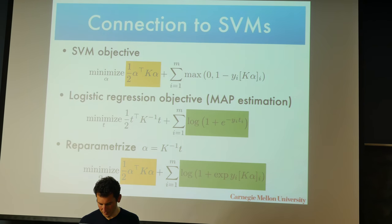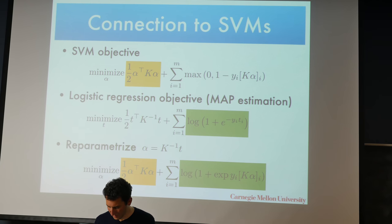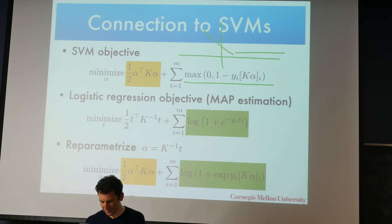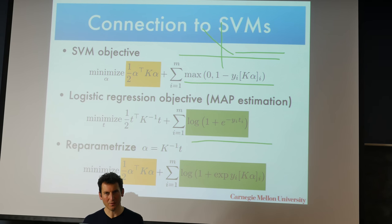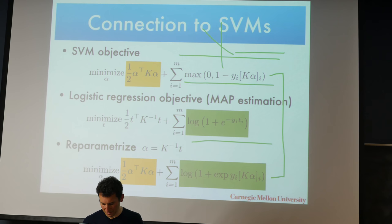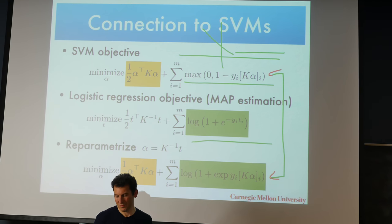Connecting this back to an SVM: in an SVM, we minimized one-half alpha-transpose K alpha plus the soft margin loss function. For logistic regression we have something similar, with the green function as our loss. If we reparameterize alpha equals K-inverse T, we get something that looks very similar to what we had before. Those two loss functions are very similar — so SVMs and Gaussian process classifications don't actually do something very different. They are just derived in very different ways, which explains why they work almost equally well.